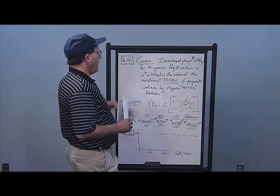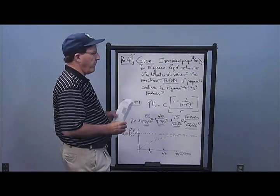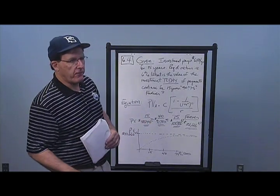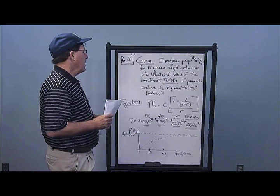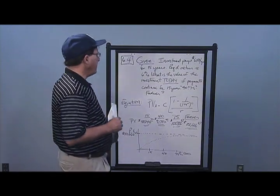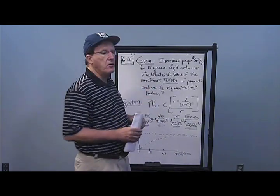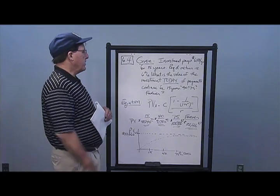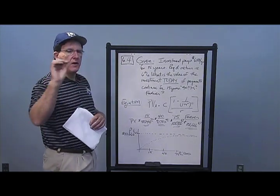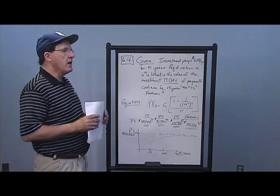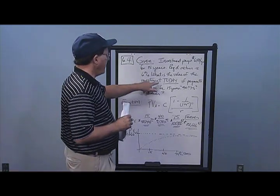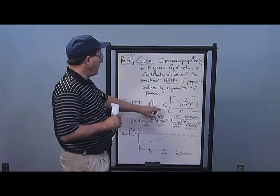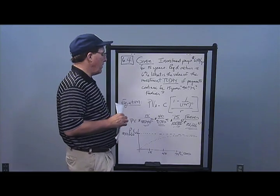In Problem 4, an investment pays $6,100 a year for 15 years, continuing on. Required return is 6%. What is the value of this investment today if payments continue for 15 years, 40 years, 75 years, and forever? Draw this out on a timeline — we do have an annuity, and we want the present value. PV annuity equals C times (1 minus 1 over (1 + R) to the T), all over R.